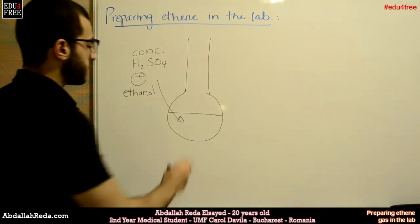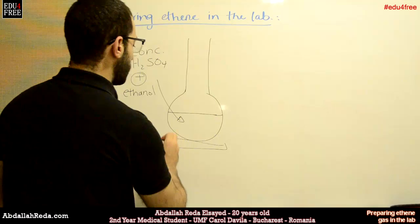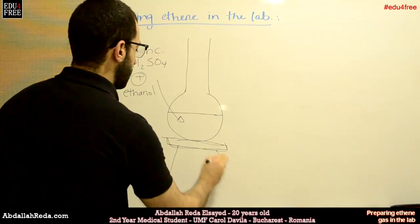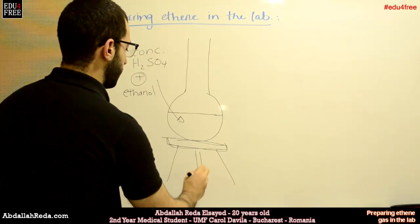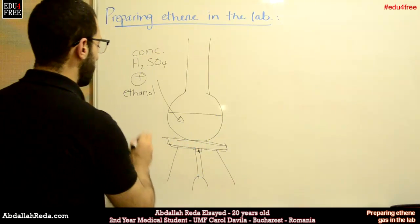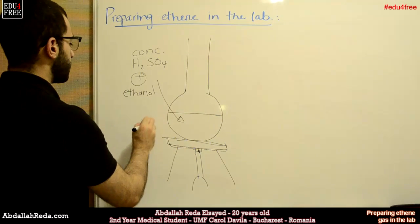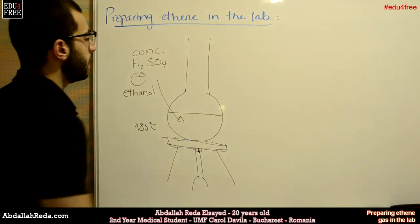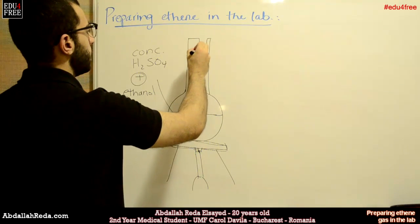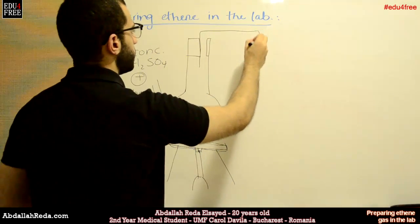This flask will be exposed to a very high temperature, relatively speaking. We'll expose it to a flame, and the temperature will reach 180 degrees Celsius. The flask will be closed by a stopper like this, and we'll add a connecting tube.